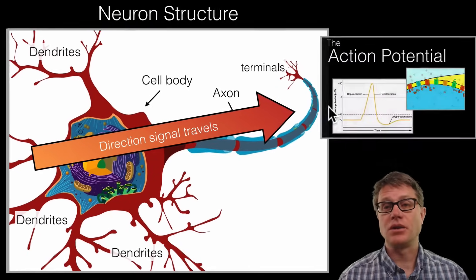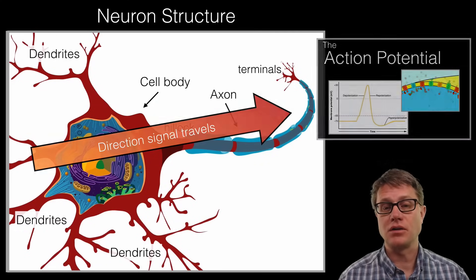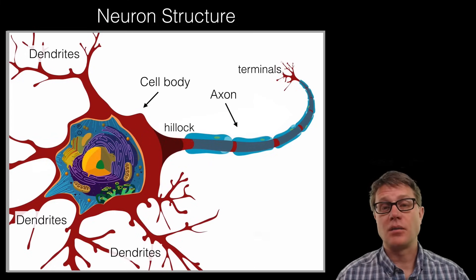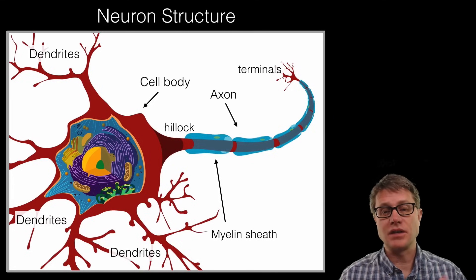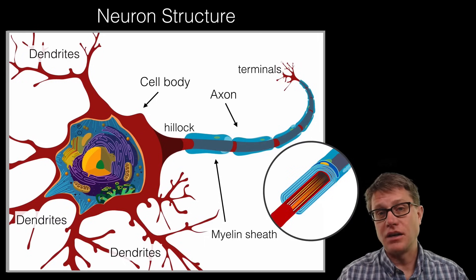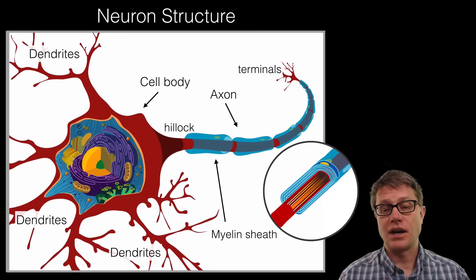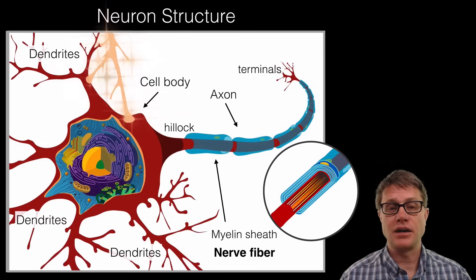Now how we do that is through an action potential. I have a video that I will put a link to where I go into the specifics of how that occurs. But certain axons in our body are really, really long. And for that information to travel quickly we will wrap them in myelin sheaths. It is a Schwann cell that is wrapped around it. The way it works is we put the voltage gated channels in between and it acts to insulate that nerve. It allows the information to travel more readily down that axon. And we generally say if you have an axon that is wrapped in a myelin sheath, we call that a nerve fiber inside our body.